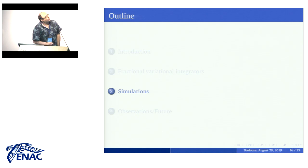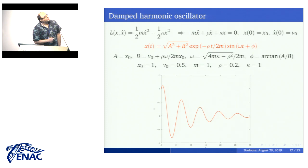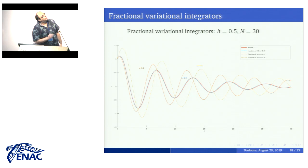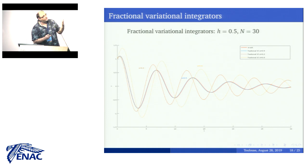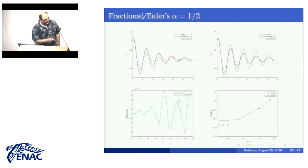We do some simulations to test the integrators. We pick the easiest example we can consider, which is a linearly damped harmonic oscillator, which corresponds to our setting when alpha equals one-half. We know this exact solution, so we can compare. When we run several fractional variational integrators with different alphas, we only get the correct tracking when alpha equals one-half, naturally. And in that case, in the upper plots, what we see is that the tracking of the configuration variable is much better than the Euler methods.